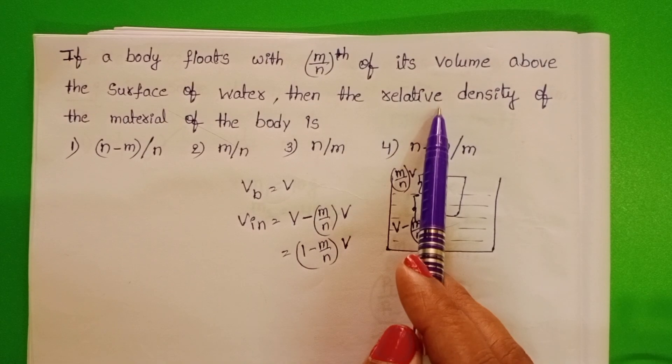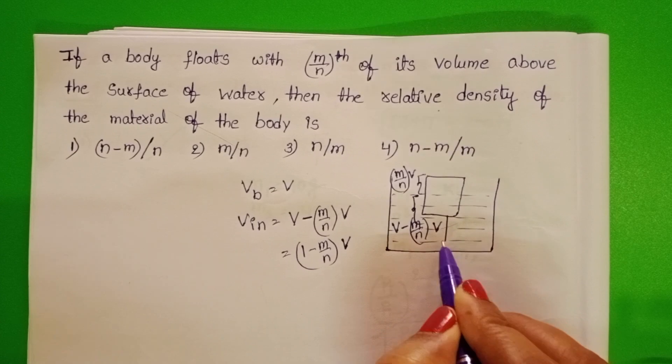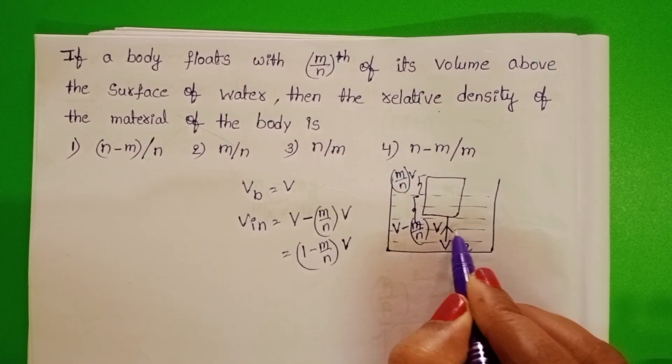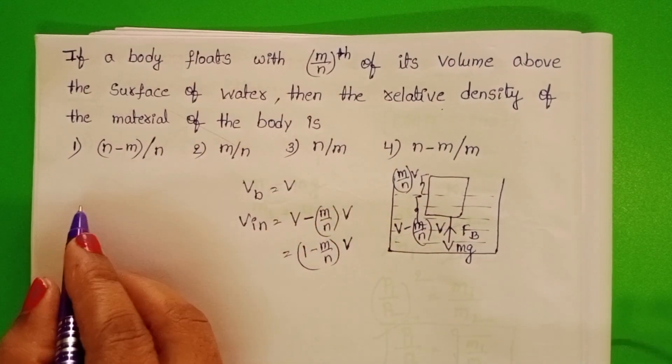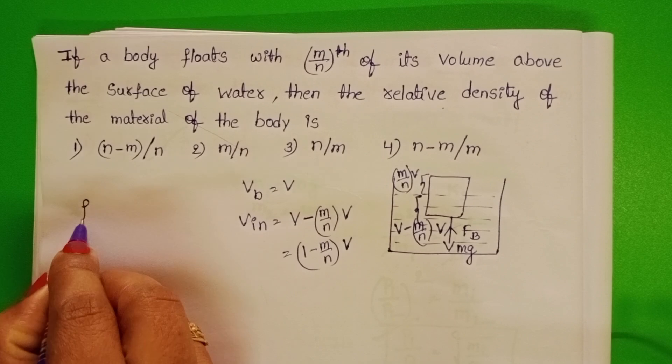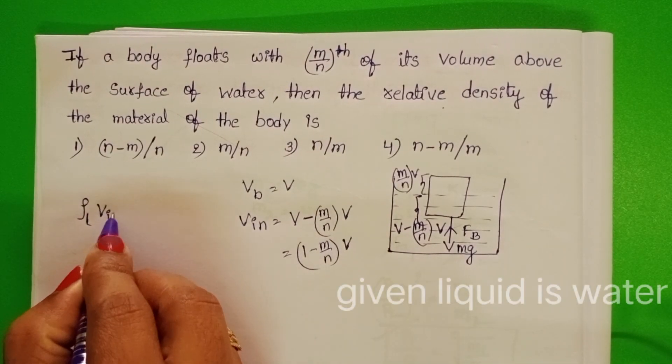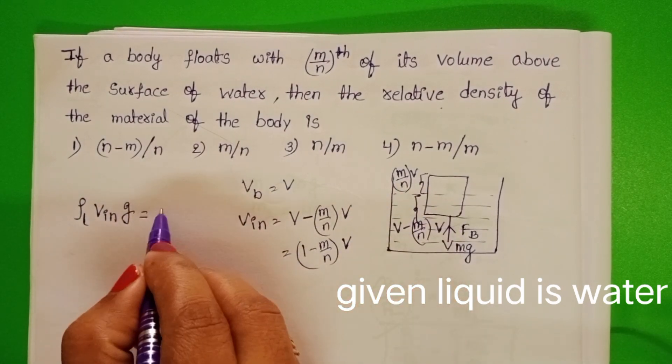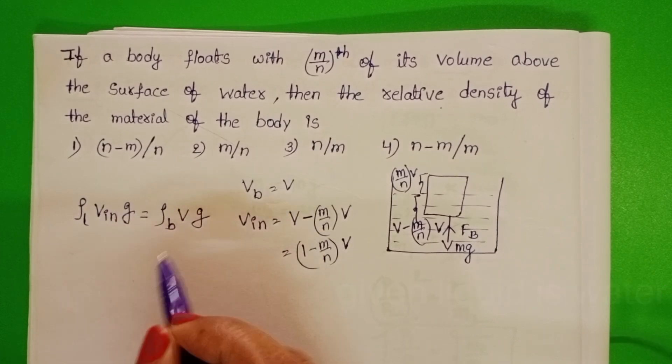We have to find out the relative density of the material of the body. We know weight of the body acts in downward direction and buoyant force acts in upward direction. Take the formula: density of the liquid into volume of the body inside the liquid into acceleration due to gravity, and density of the body, volume of the body into G.